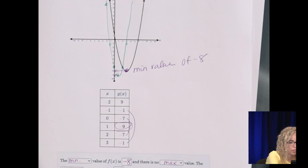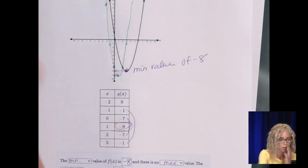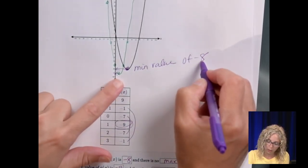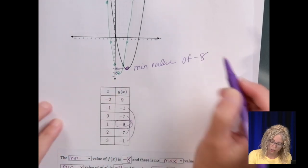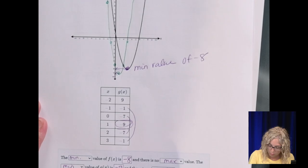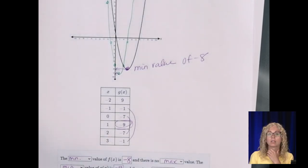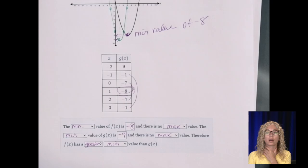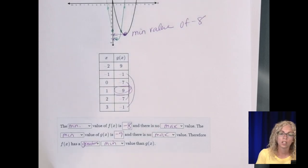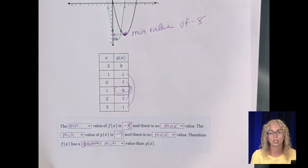Therefore, F of X has a... how does negative 8 compare to negative 9? Well, that is larger, has a greater minimum value than G of X. And that is it for today. So make sure you study for your test. Go back and do some more practice problems if you need to. And also seek out to Mr. Hart or myself. Reach out to us if you need some help. Have a good day and good luck on your test. Bye-bye.